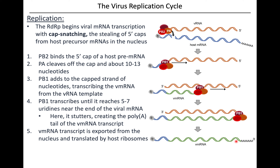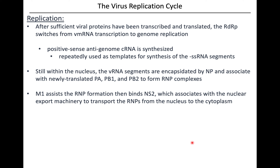PB1 then adds new nucleotides onto the snatched cap using the viral genomic RNA as template, making viral mRNA. At the end, the polymerase stutters a little to give a poly-A tail, so the cell recognizes it as ready-to-translate mRNA with both a five prime cap and a poly-A tail. This mRNA then leaves the nucleus through the nuclear pore to join the ribosome. After enough viral proteins are produced, the RDRP switches into genome replication mode, cranking out complementary RNA without the five prime cap or poly-A tail.